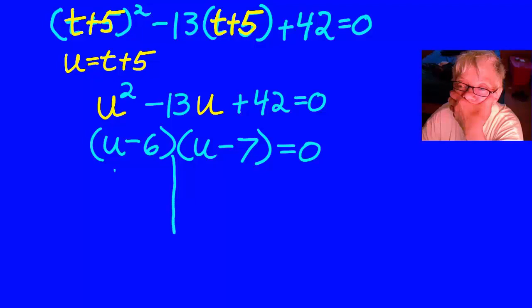I set each factor equal to 0, and then I solved each resulting little equation. So that I got u equals 6 and u equals 7.